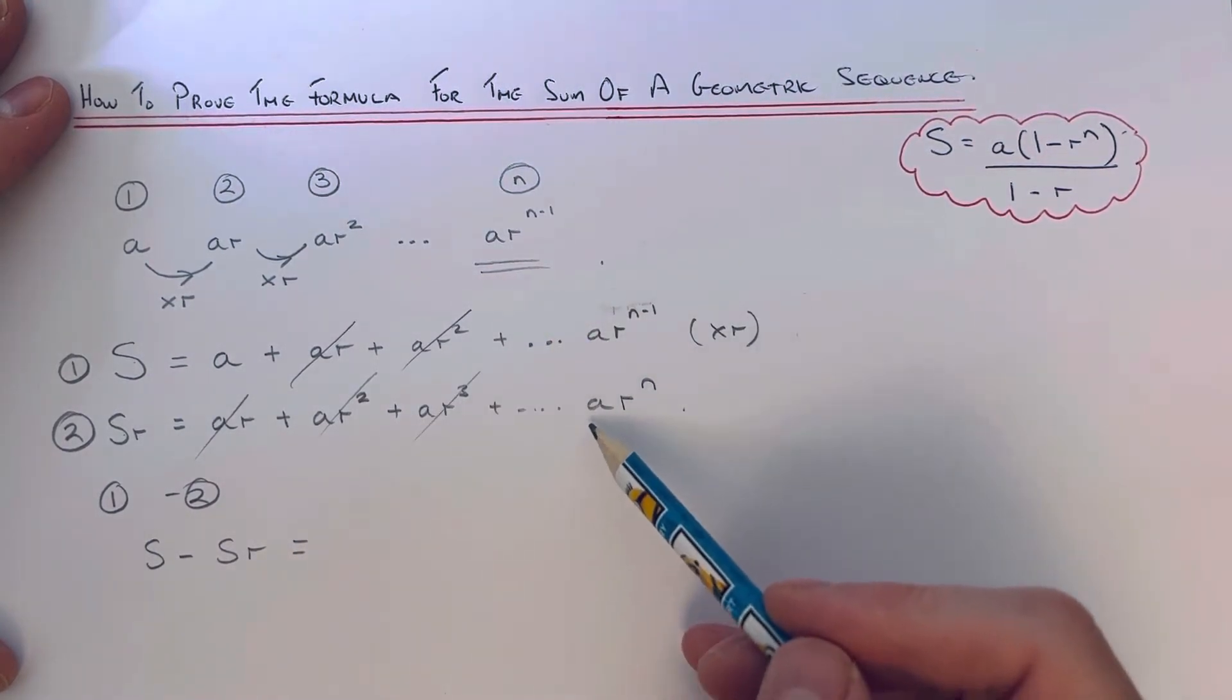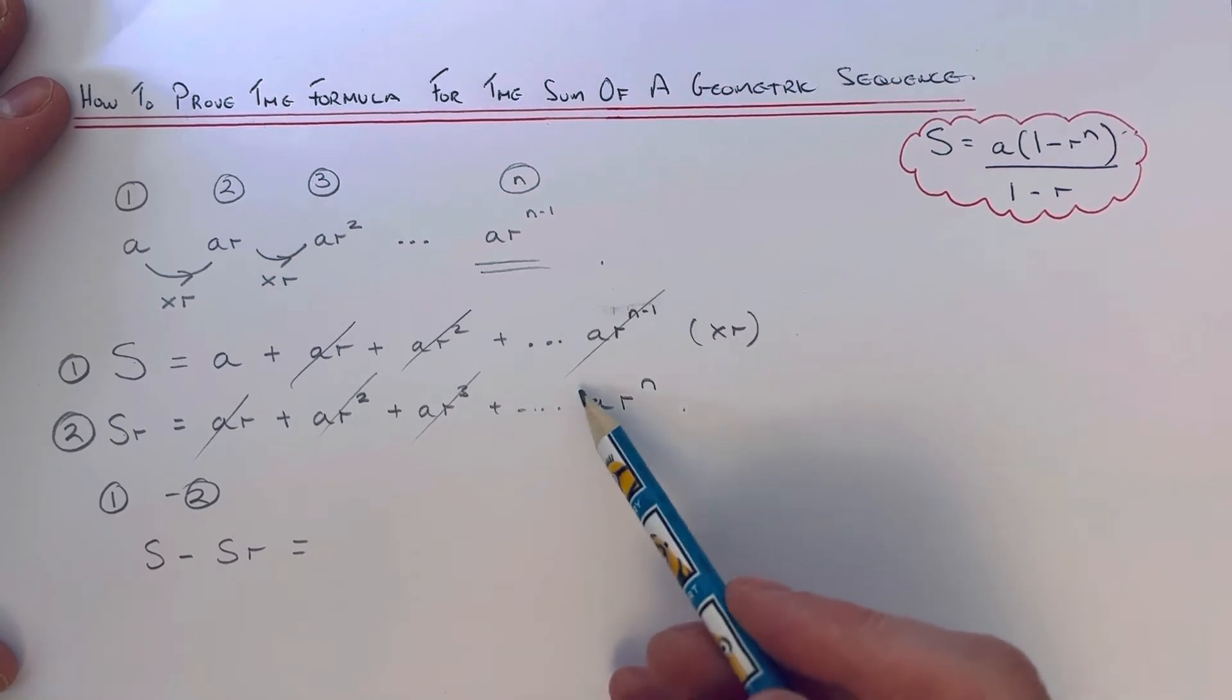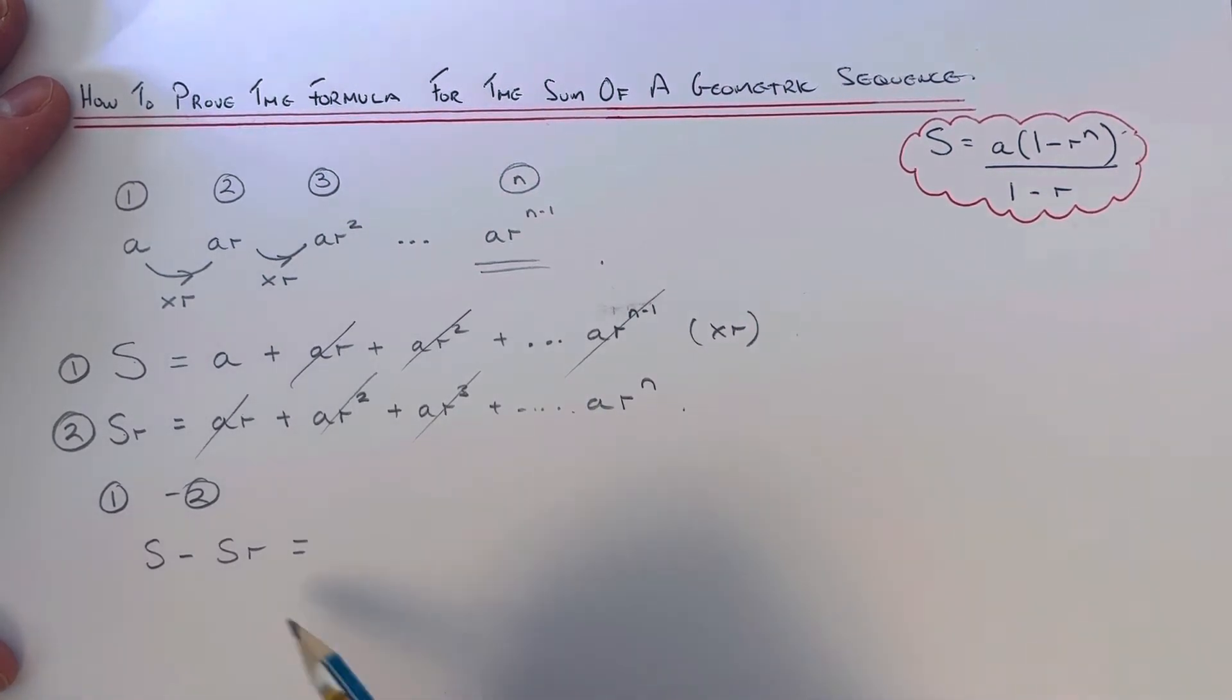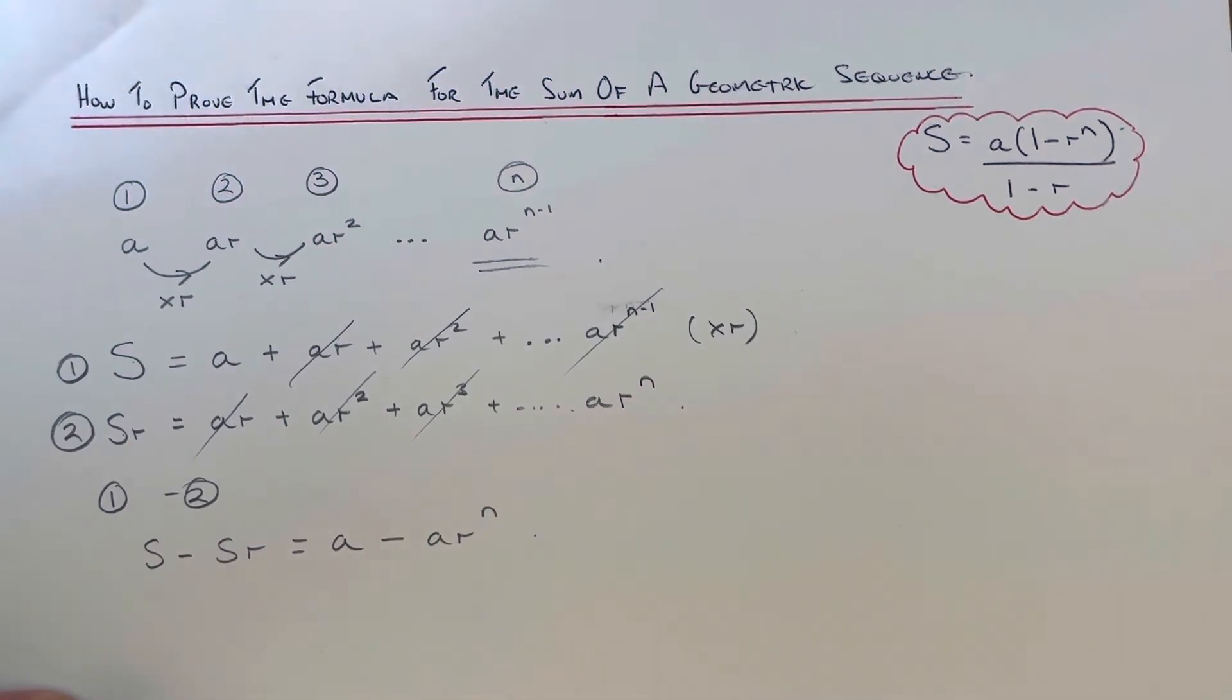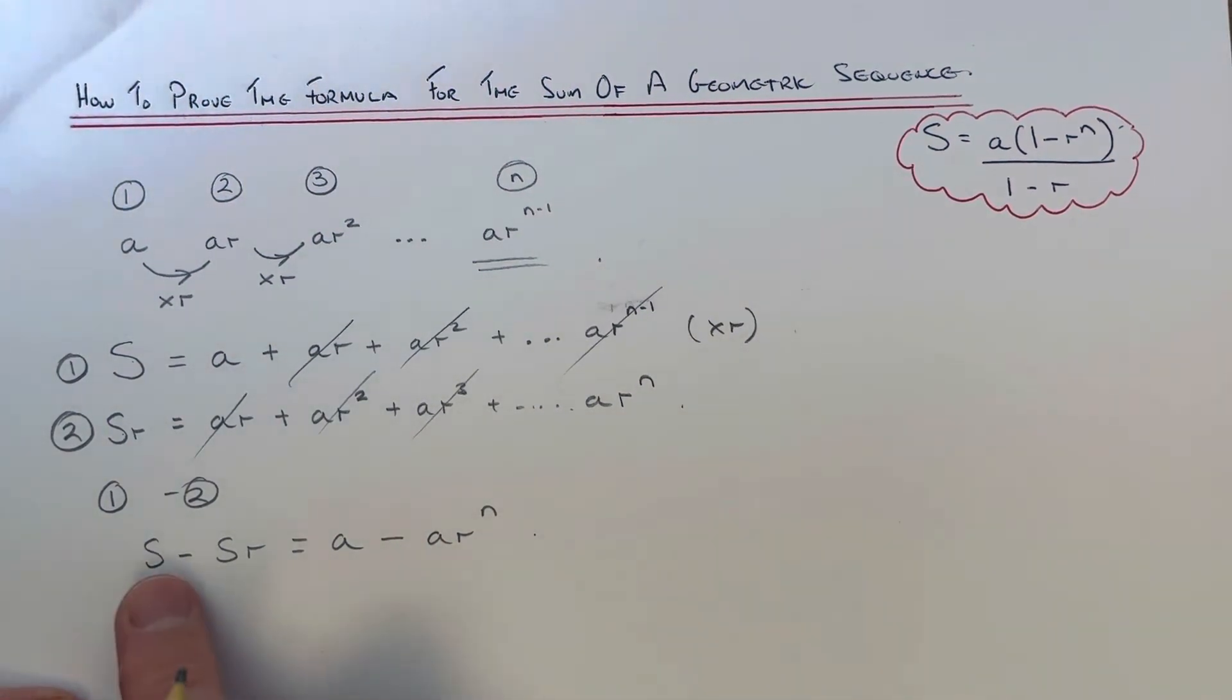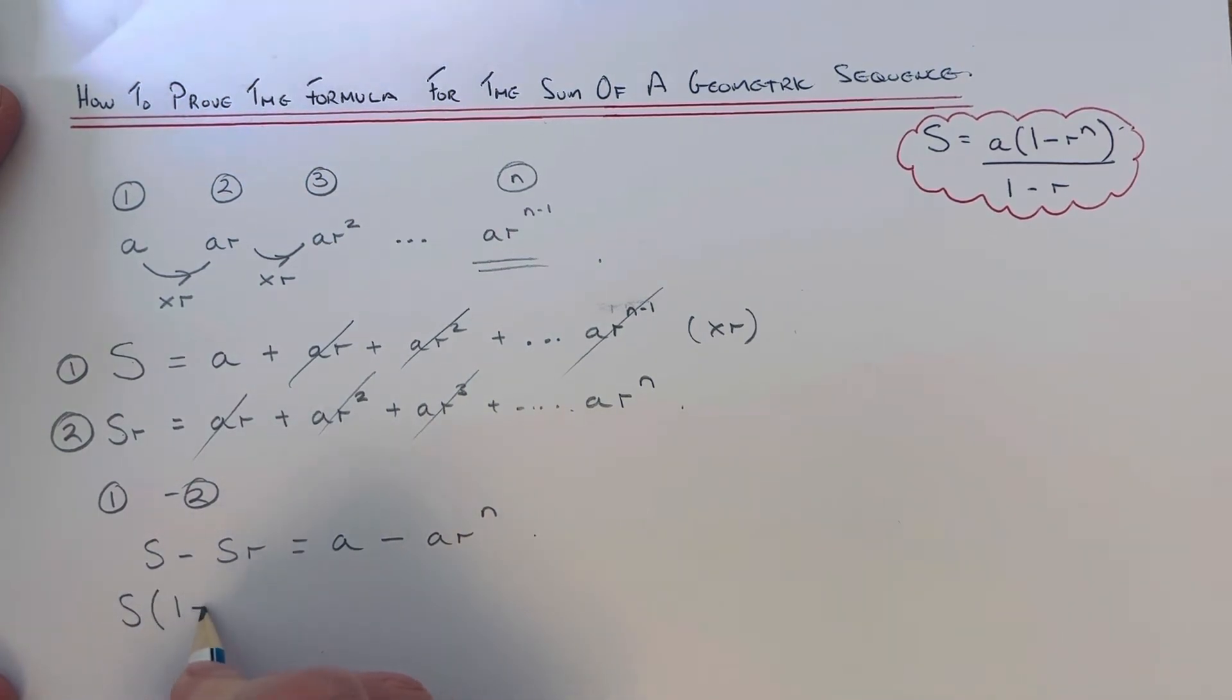Same with this one and the next one will cancel out with that, and this one will cancel out with the one before it as well. So what we're left with is a minus ar to the power of n. So the next step then is to factorize the left hand side, so we put S bracket one minus r. And then we can also factorize the right hand side by taking an a out, so be a bracket one minus r to the n.